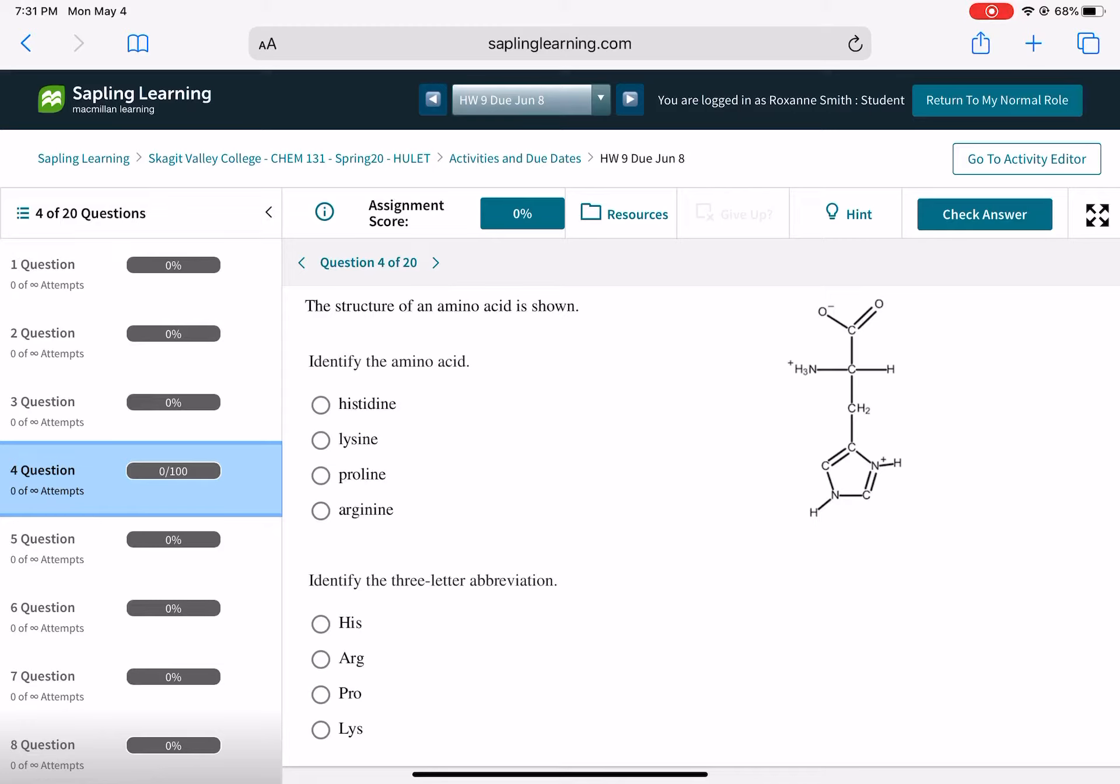So this particular amino acid, if I'm looking at it, it looks to me like histidine. Histidine, looking at its R group and the three-letter abbreviation is probably HIS. That's probably all that it is.